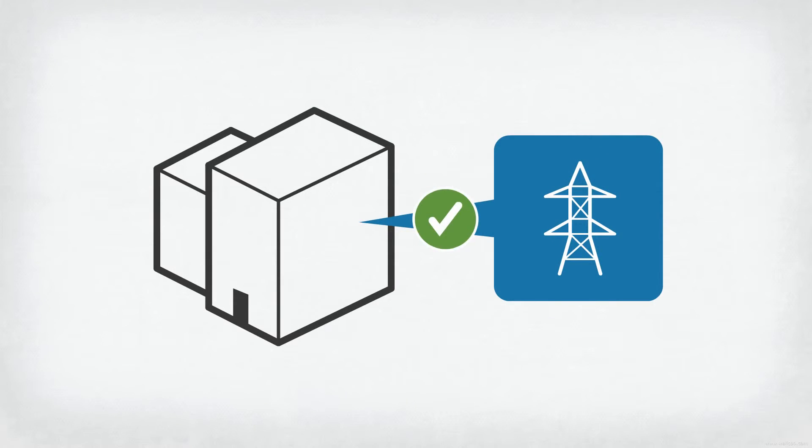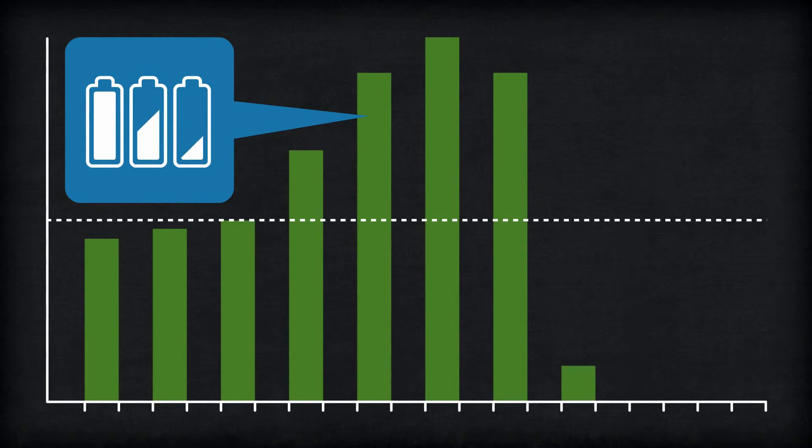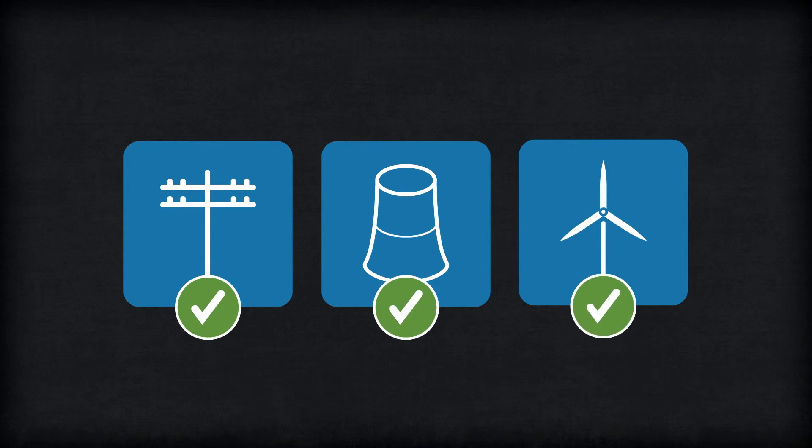Energy companies can reliably monitor equipment conditions, predict when excess energy will be available, and forecast shortages. Utilities can also take proactive steps to prevent power outages.